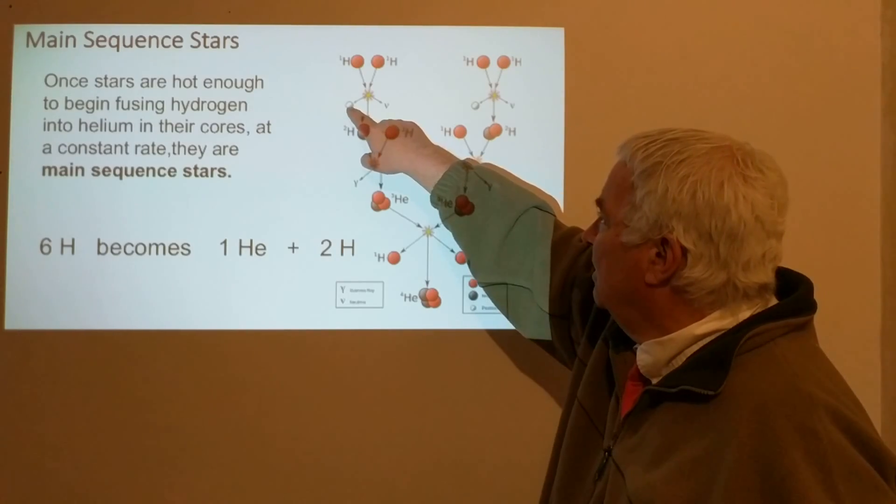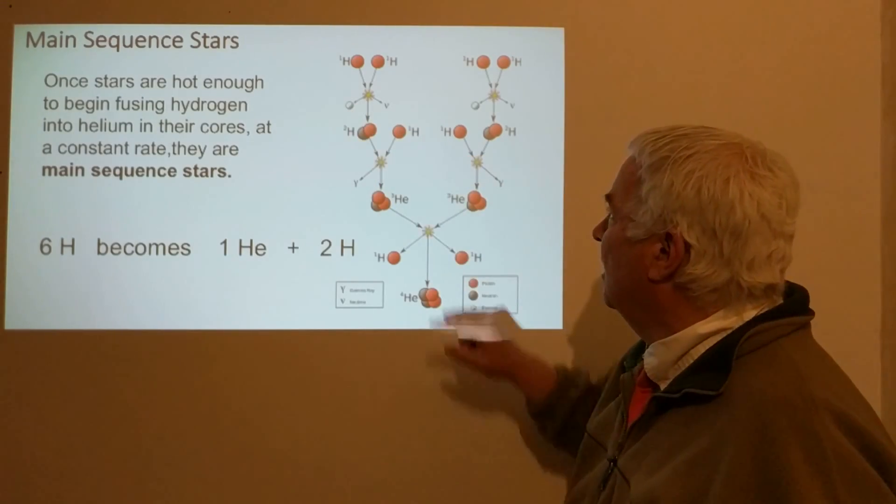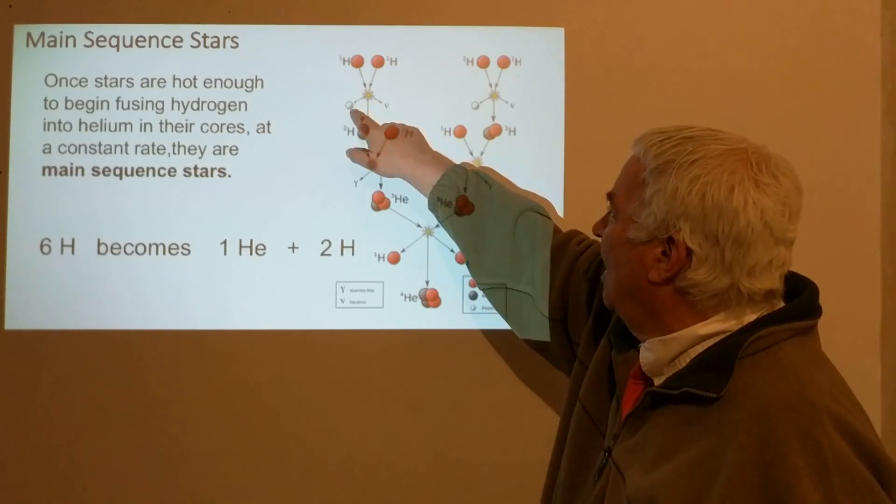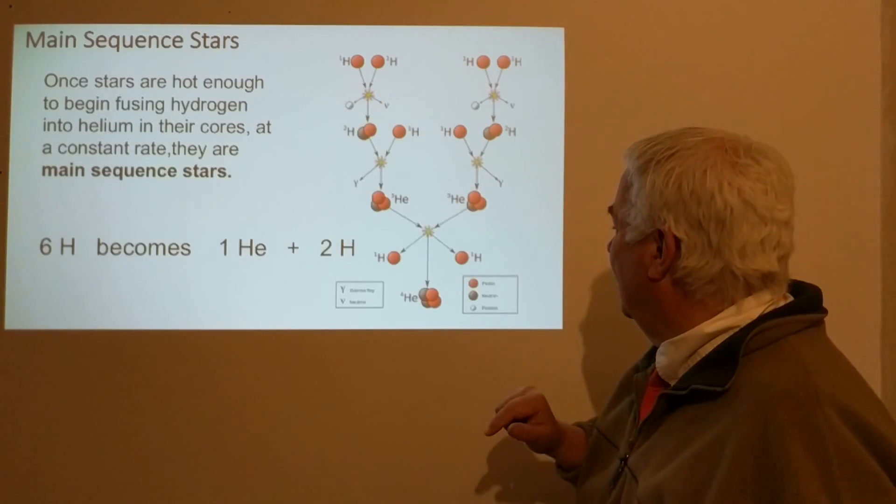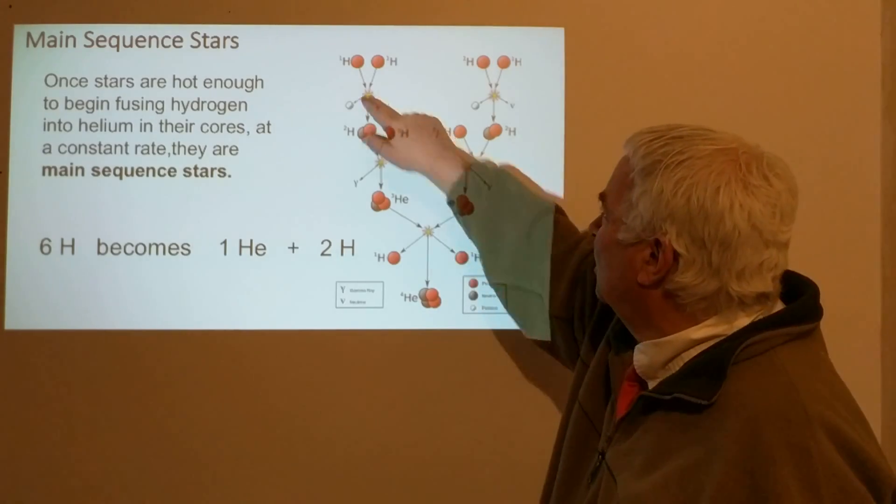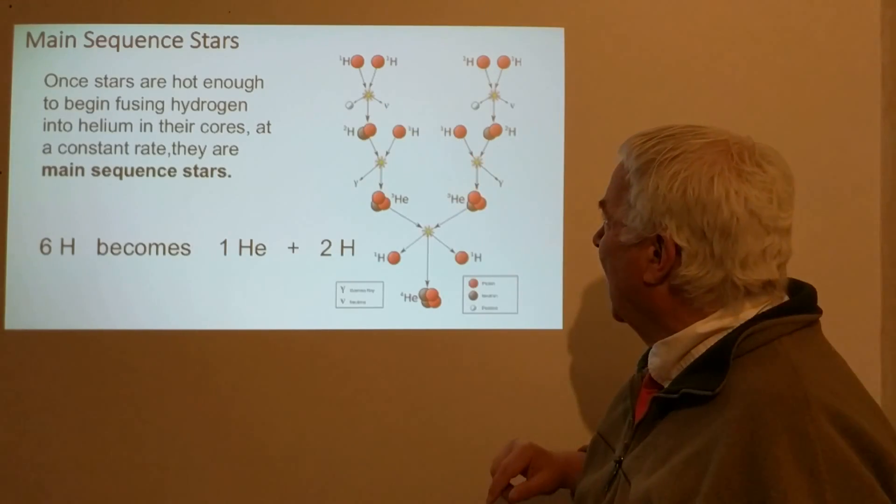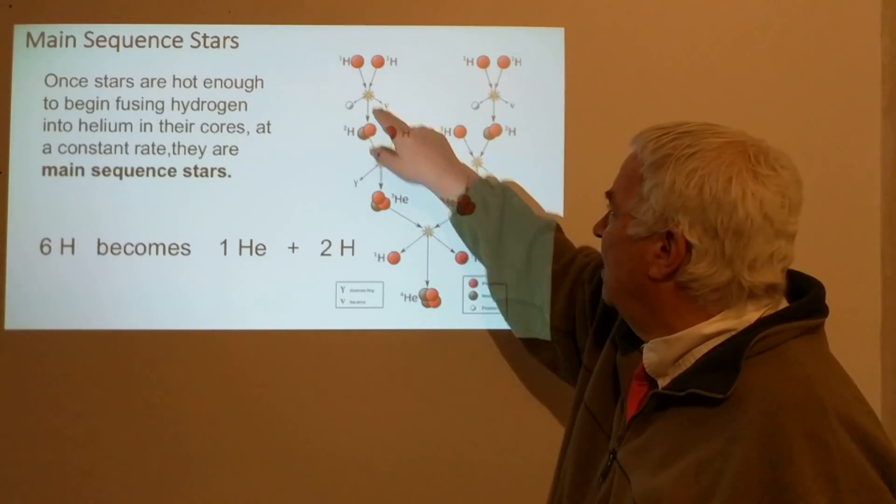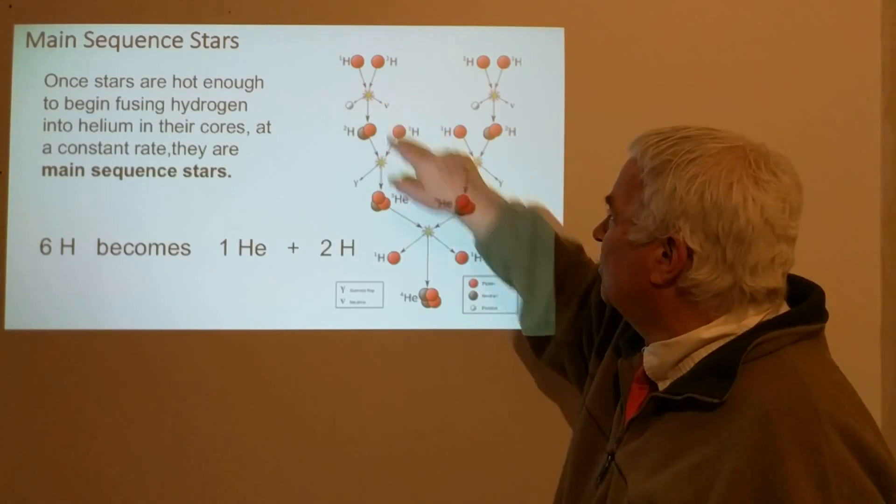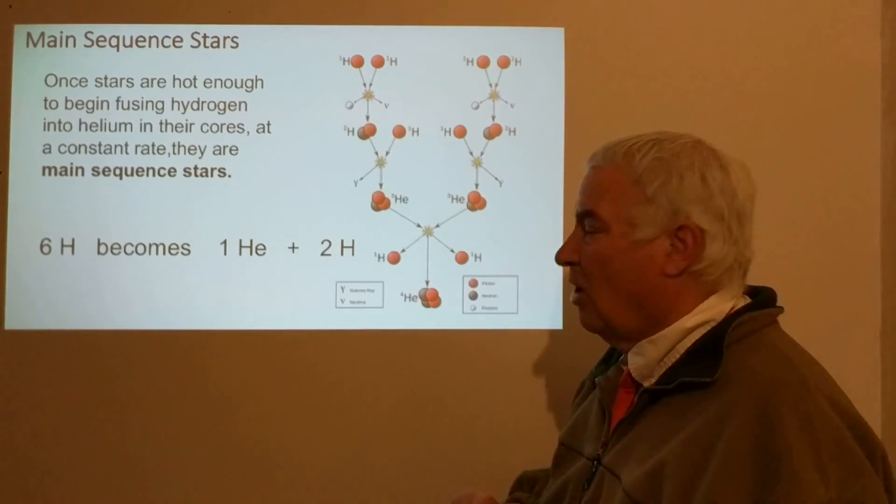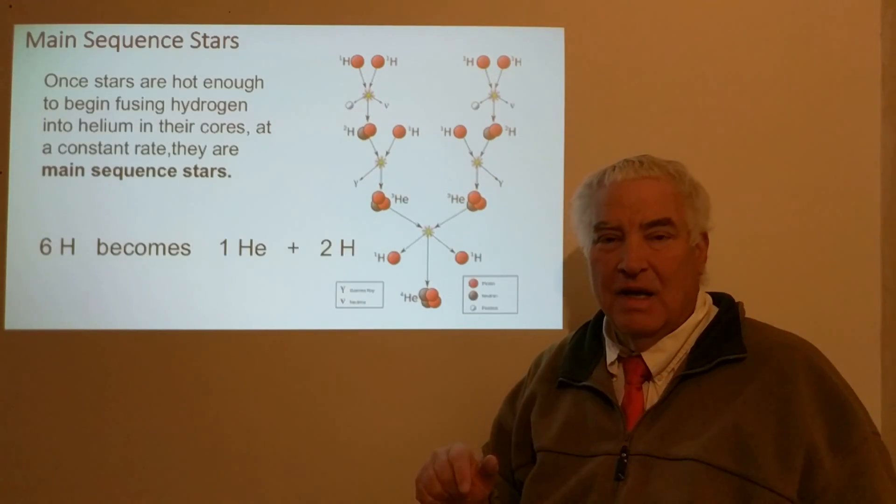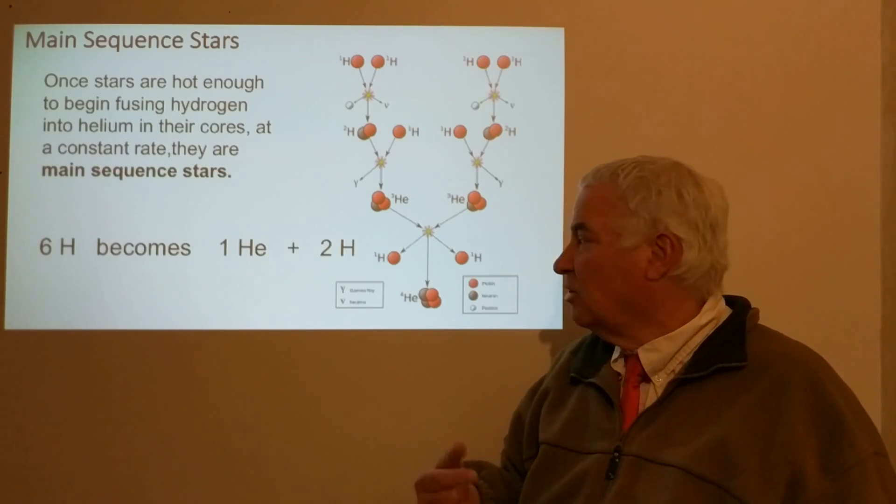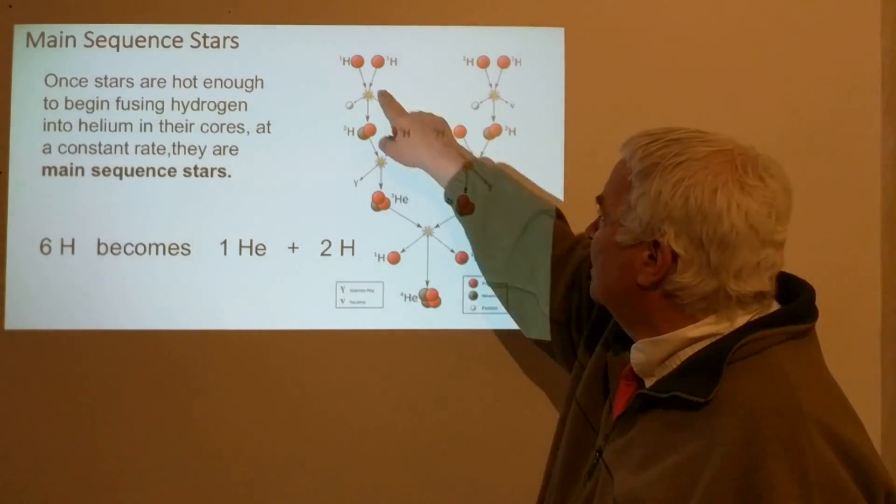The white sphere is a positron, and the yellow is the production of light. Then we have a neutrino coming off, so light is created, a neutrino is created, and a small particle called a positron. A positron is an anti-matter particle, that is an anti-electron.